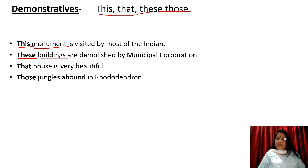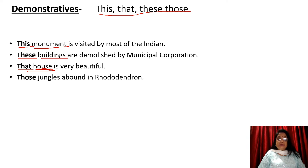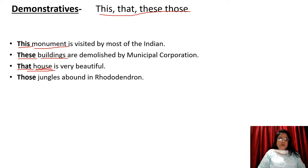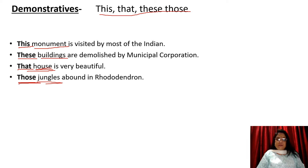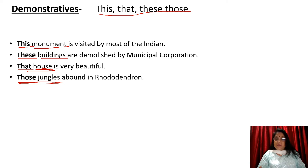'That house is very beautiful.' Here, 'that' is a demonstrator — it is pointing to or referring to this house, acting as a determiner. 'Those jungles' — 'those' is used as a demonstrative determiner, referring to specific jungles. So this is how we use demonstrative determiners: this, that, these, those — they point out and refer to something specific.